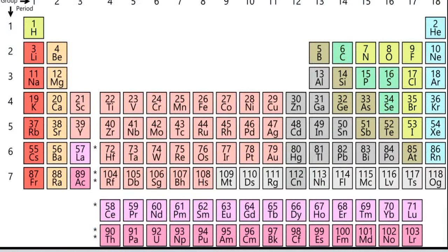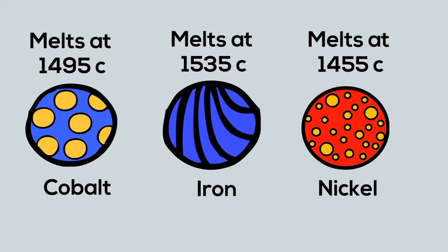The elements are arranged on the periodic table based on their number of protons. For example, sodium has 11 protons. Potassium has 19. The number of protons of an element always stays the same. Each element also has its own unique set of properties.